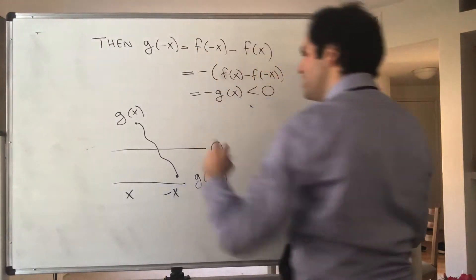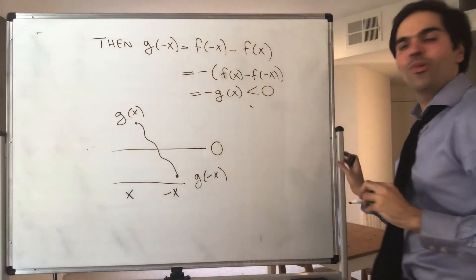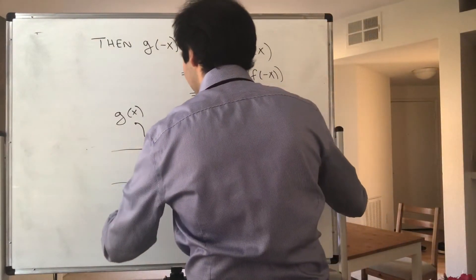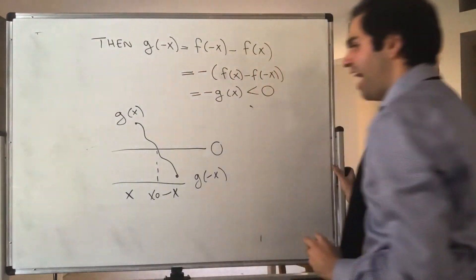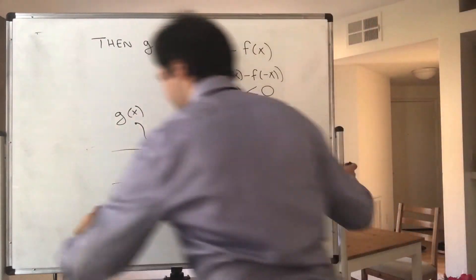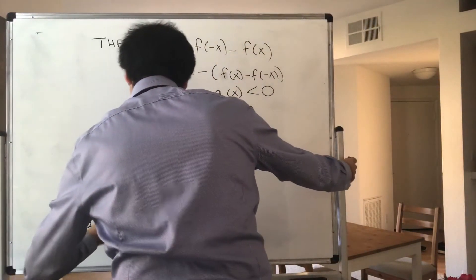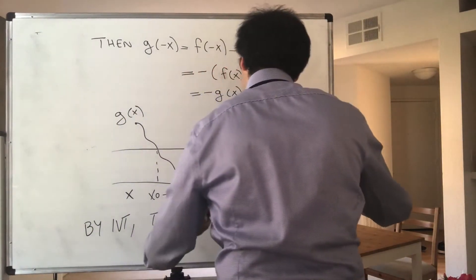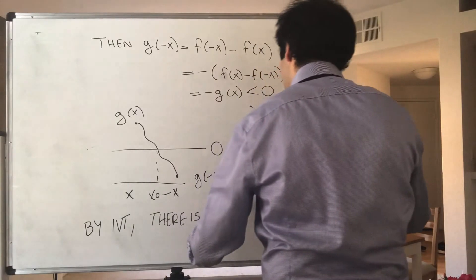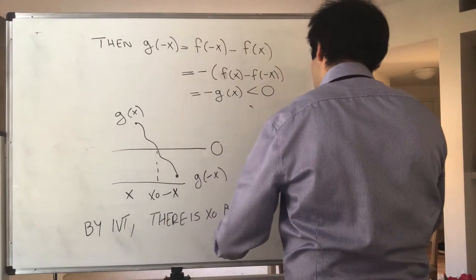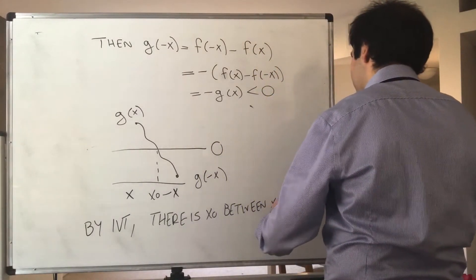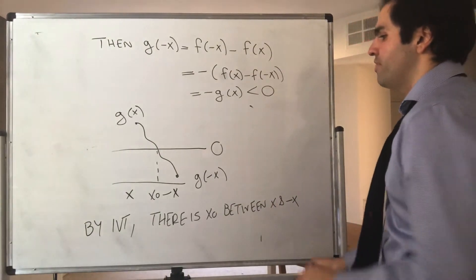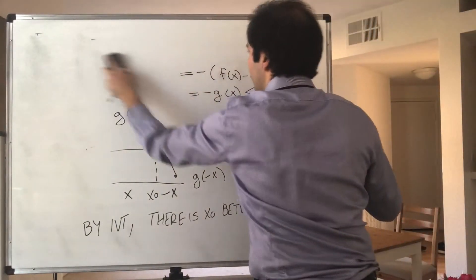And therefore, just by the intermediate value theorem, it has to cross the x-axis at some point. So by IVT, since g is continuous, there is x₀ between x and minus x such that g(x₀) is equal to zero.